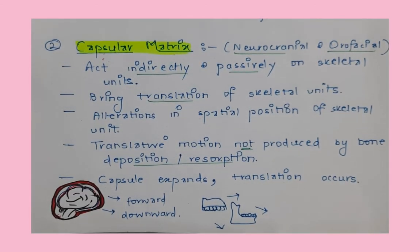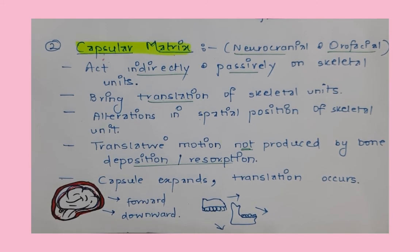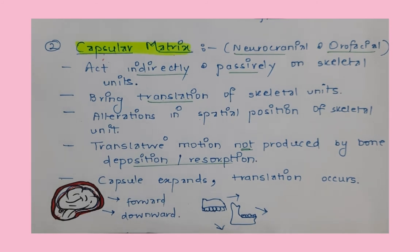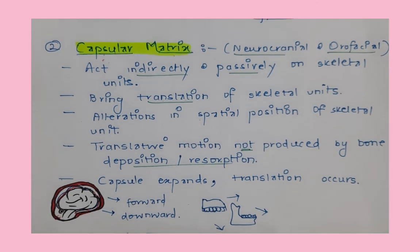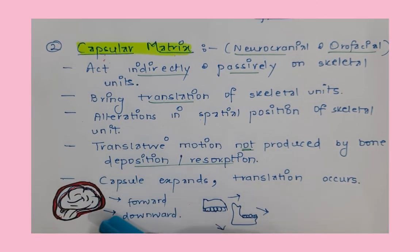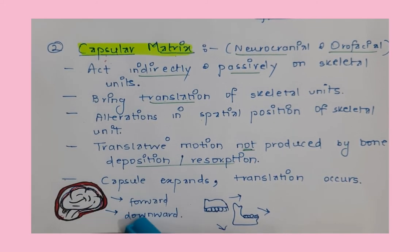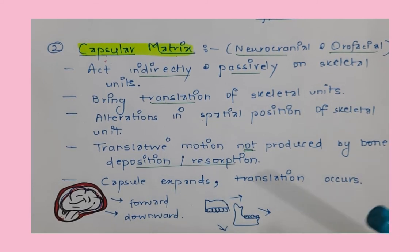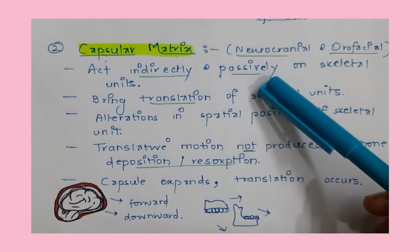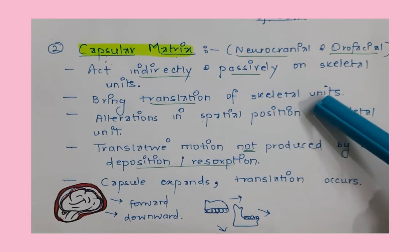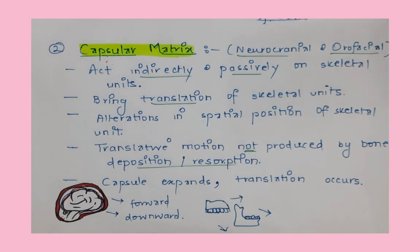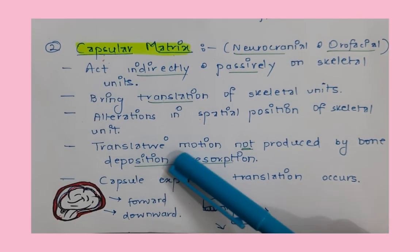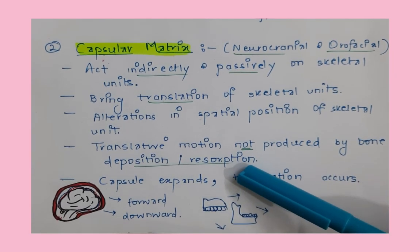Moving on to the capsular matrix — this acts indirectly and passively on the macroskeletal units. Its constituents are the neurocranial and orofacial capsules. When expansion of the neurocapsule around the brain occurs, it causes forward and downward translation of the maxilla and mandible. So it acts indirectly and passively, bringing about translation — an alteration in the position — of skeletal units. Unlike the periosteal matrix, this translative motion is not produced by bone deposition and resorption.